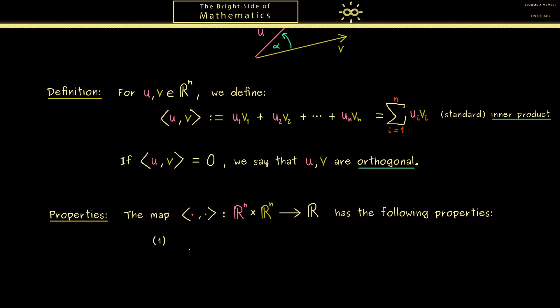First it's easy to see if we put the same vector left and right we cannot get out a negative number. This is simply because we sum up squares in this case.